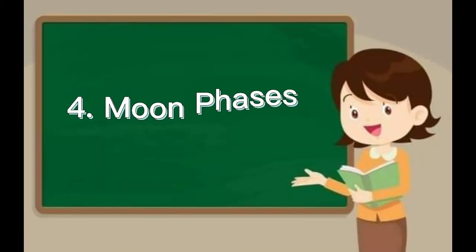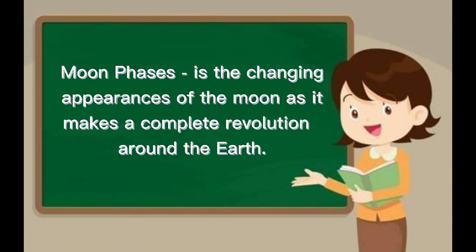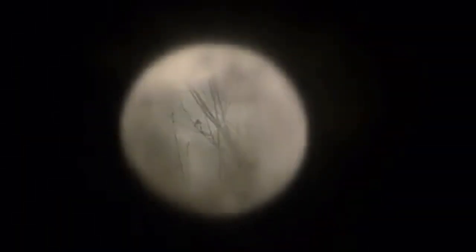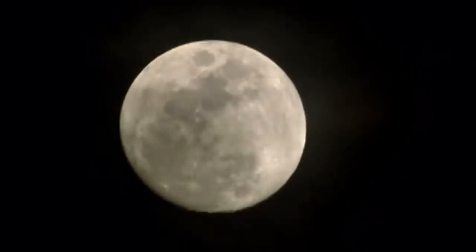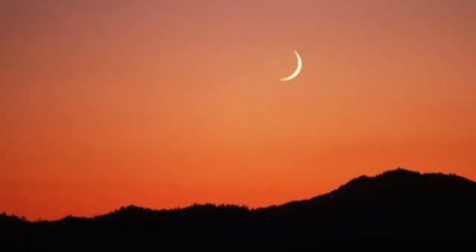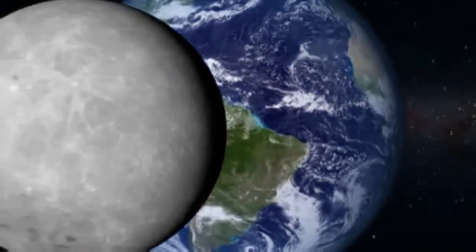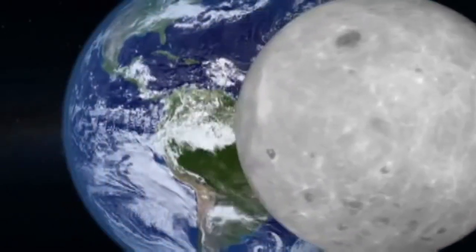Number 4: Moon faces. Moon faces refers to the changing appearances of the moon as it makes a complete revolution around the earth. For centuries, man has been intrigued by the moon's changing face. Sometimes it's high in the sky; some nights it's a sliver, and other times it disappears completely. But this cycle becomes predictable as the moon's phases repeat every month. So what causes the moon to have phases, and why is its cycle consistent?